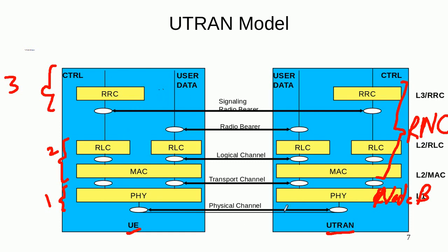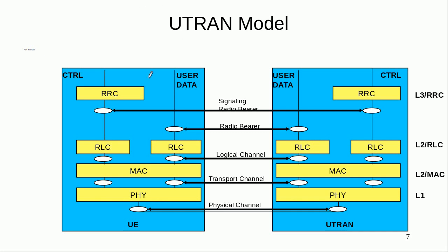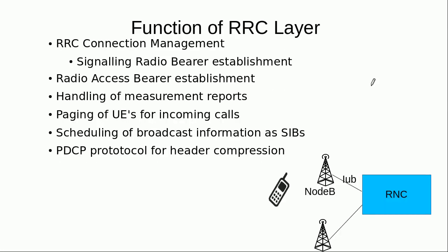Once the signaling radio bearer is established, the radio bearer is then set up on which the RAB service runs. The RRC entity establishes the signaling radio bearer first, and after that the radio bearer on which the actual RAB service runs. The RRC layer resides in the RNC on the UTRAN side, and the mobile also has an RRC entity. Whenever the mobile or the network wants to connect, the RRC entity is used.